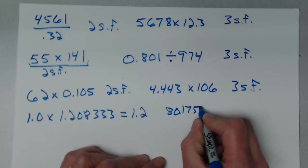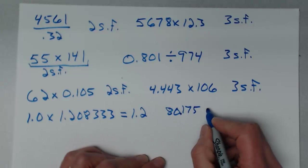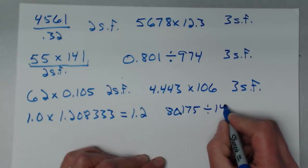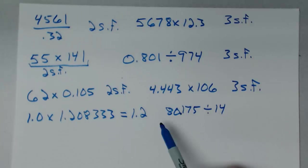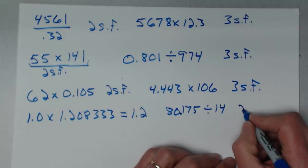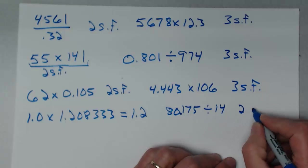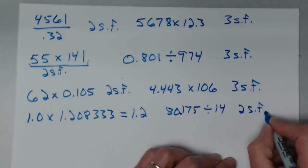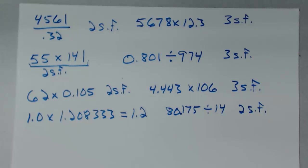Finally: 80.175 divided by 14. This has five significant figures, but 14 has only two. So my result can have only two significant figures. I hope this helps you understand what to do with significant figures when multiplying and dividing. If you need to see it again, watch it again. Ask questions in class if you're one of my students.